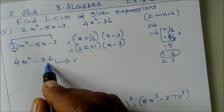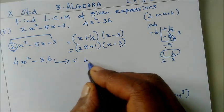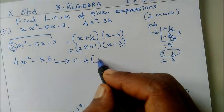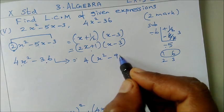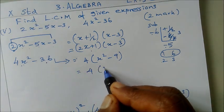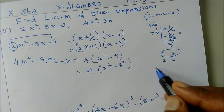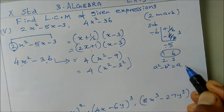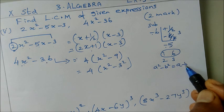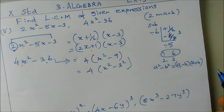Next one: 4x squared minus 36. Taking 4 as common, 4 times (x squared minus 9). This is x squared minus 3 squared. This is in the form of a squared minus b squared. The formula, the identity, is a minus b into a plus b. This is the first algebraic identity.